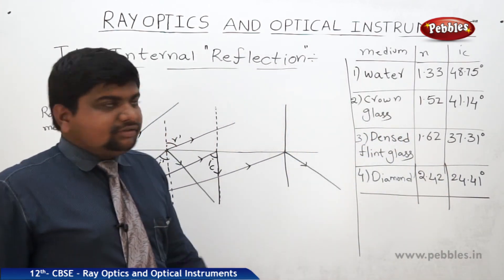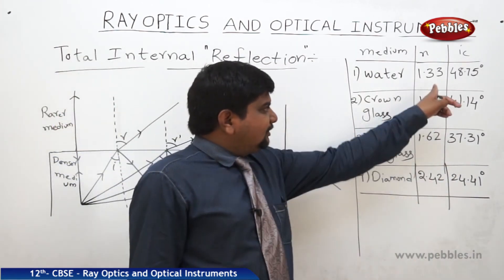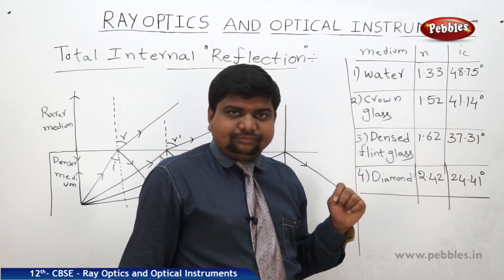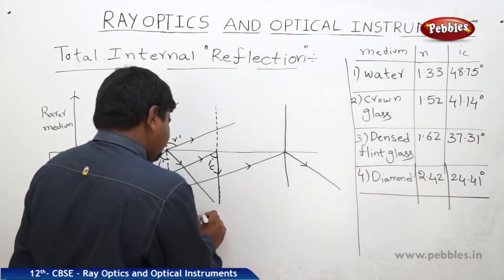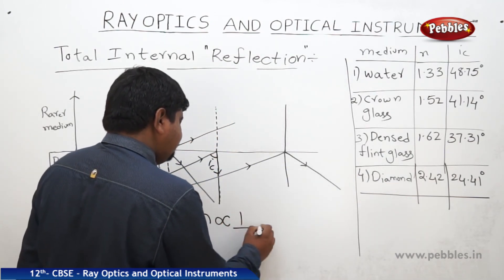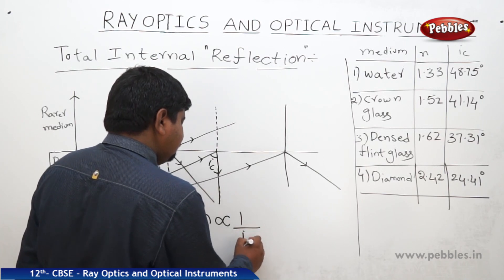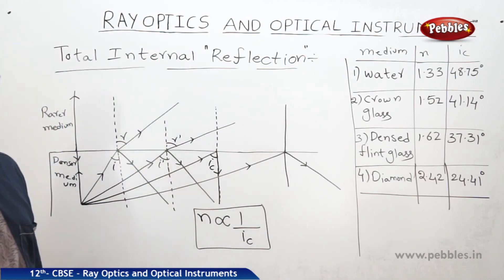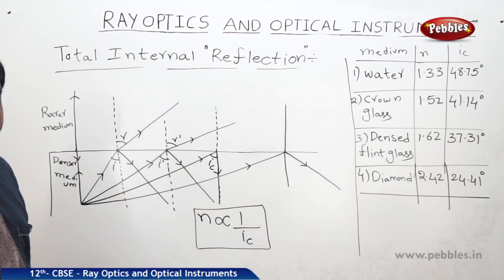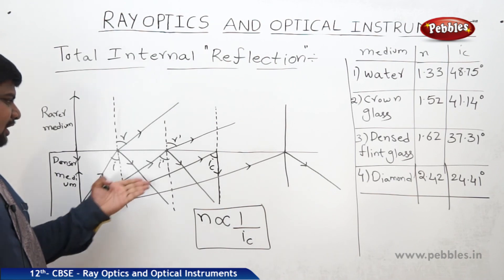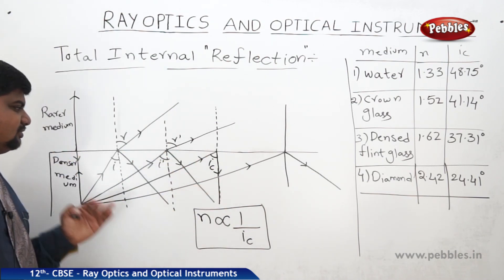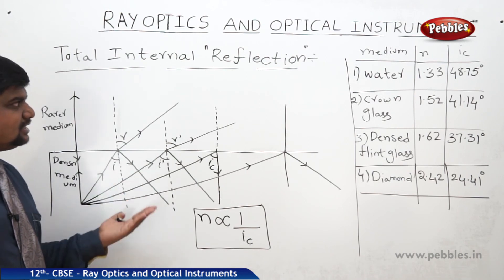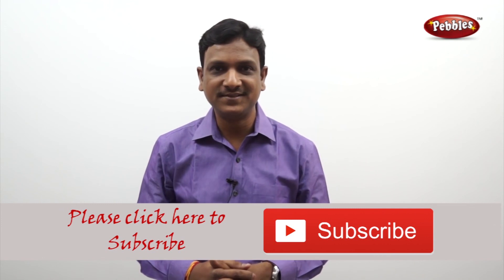If you observe the table, as the refractive index increases, the critical angle decreases. So the refractive index is inversely proportional to the critical angle — IC is inversely proportional to the refractive index. Now we will see what are the natural ways to demonstrate total internal reflection.